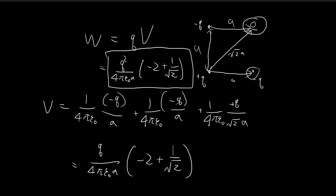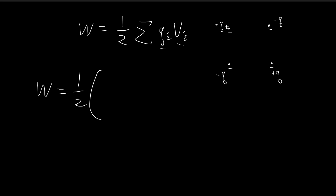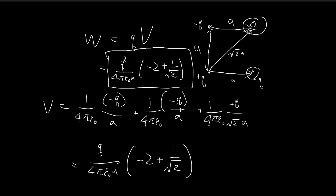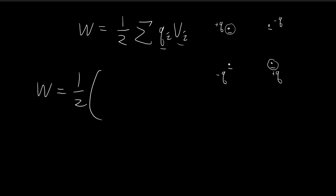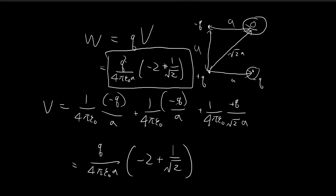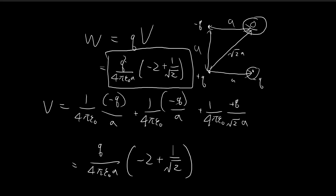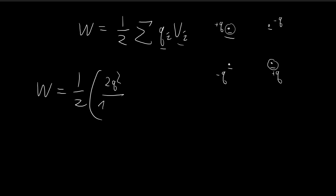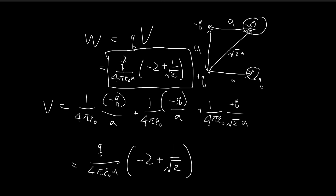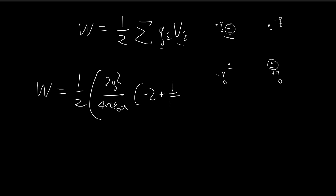In part A, we already found qV for the positive Q corners. For these two corners, the charge times the potential is exactly equal to the expression from part A, since we're doing exactly what that formula asks. So we can immediately take the answer from part A and multiply by 2, because we have two corners with positive Q charge: times negative two plus one over the square root of two.